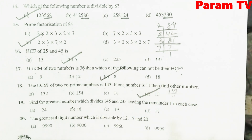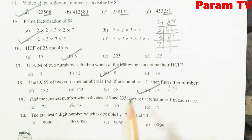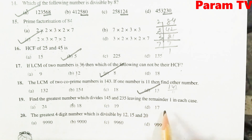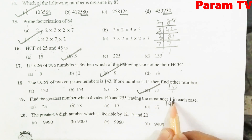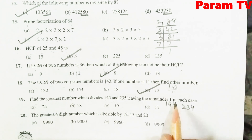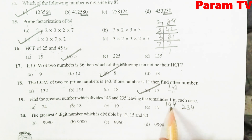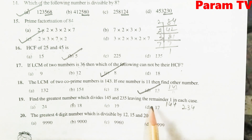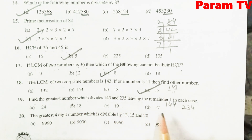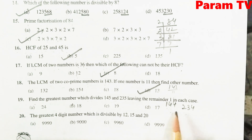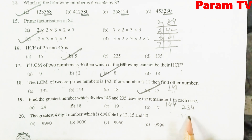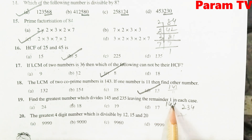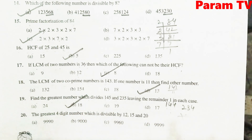Find the greatest number which divides 144 and 234, leaving remainder 1 in each case. तो आपने इनका HCF निकालना है. मैंने बहुत अच्छी तरह से बताया है — वो आप check करें. आपका answer 18 आना चाहिए. This is the right option.